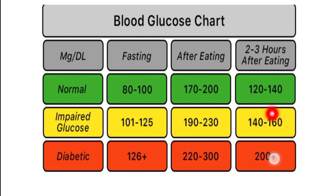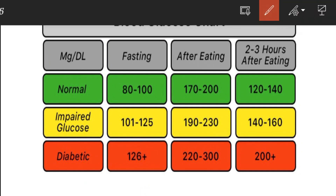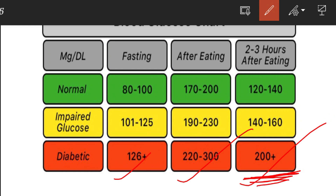Two hours after eating, you can have 160 mg/dL, which indicates impaired glucose and could develop into a diabetic state. For a diabetic fasting state, blood sugar is 126 mg/dL or above. Just after eating, you can have 200 mg/dL, which indicates a diabetic state.